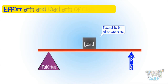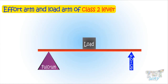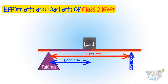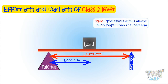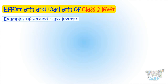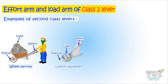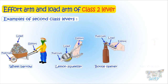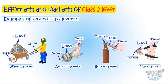Now let's learn about class 2 levers, where the load is in the center. The effort arm is the distance between the effort and the fulcrum, and the load arm is the distance between the load and the fulcrum. So in every case of a class 2 lever, the effort arm is much longer than the load arm. Therefore, class 2 levers are mostly used for heavy weight activities. Examples include a wheelbarrow, lemon squeezer, bottle opener, and nutcracker — all have the load in the center, so all of them have an effort arm much bigger than the load arm.